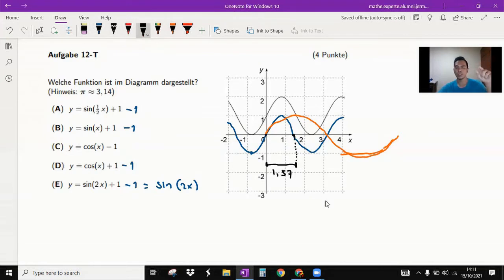Now look at the orange line - the period is from here to here and it's 3.14.